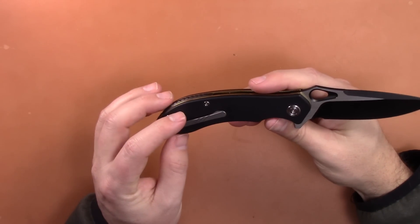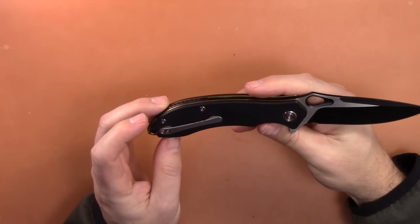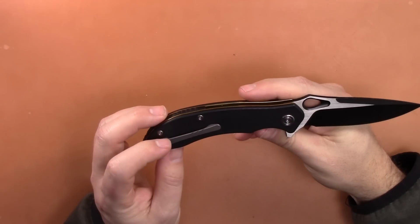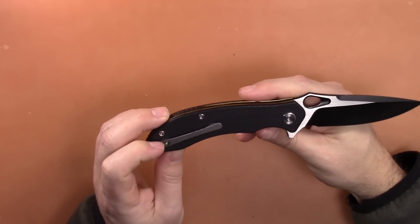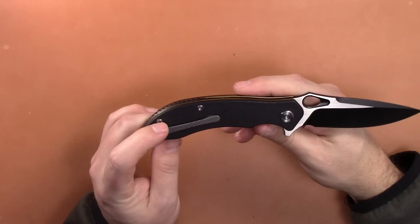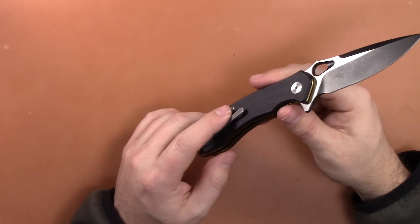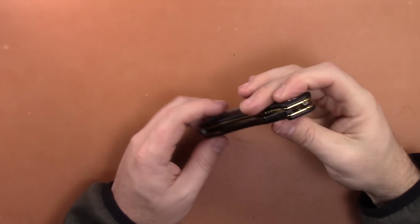The pocket clip is titanium. And the pocket clip actually looks a little out of place here. I wish it was anodized like a black. It's kind of their standard stonewashed finish on their pocket clips they do. And it kind of looks a little out of place. That's just one small thing.